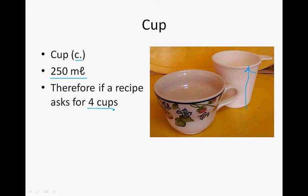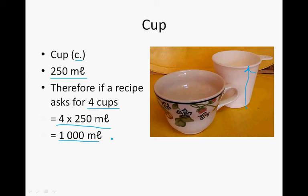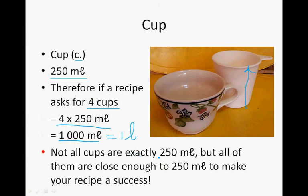If a recipe asks for 4 cups, it is equal to 4 times 250 milliliters, which is about 1,000 milliliters. Not all cups are exactly 250 milliliters, but all of them are close enough to 250 milliliters to make your recipe a success. Just remember that a mug is much bigger than a cup, so when we only have a mug to measure with, we will not fill the mug to the brim — otherwise it is about 400 milliliters.